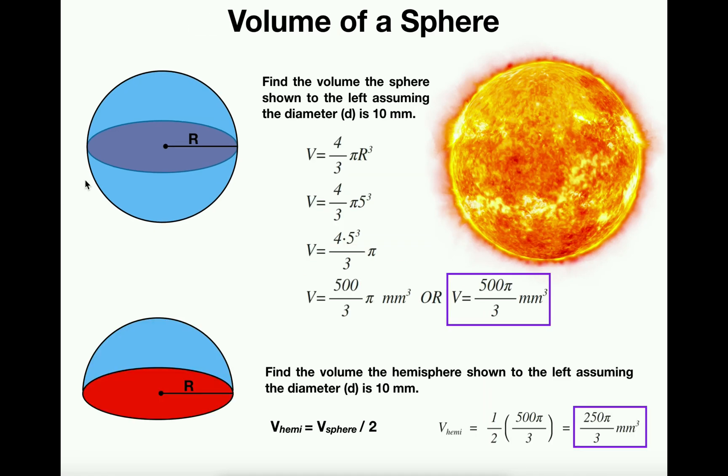Because if you do the power rule, you would multiply down by 3 and then reduce the power of r by 1 to 2. And you'd be left with 3 times 4/3πr² or just 4πr². And it turns out that that's no coincidence that the volume, if you take its derivative, it becomes the surface area formula.